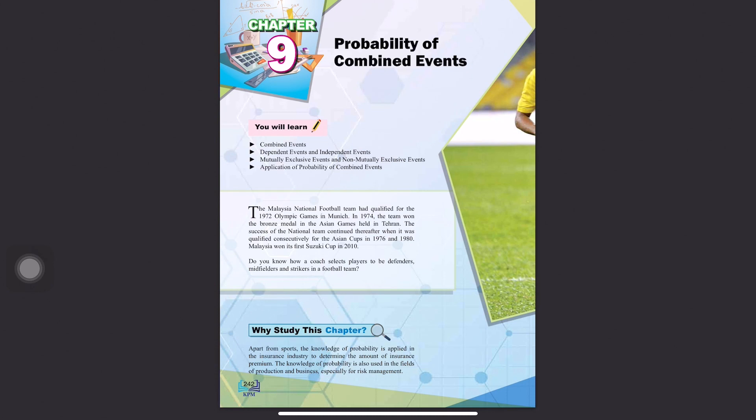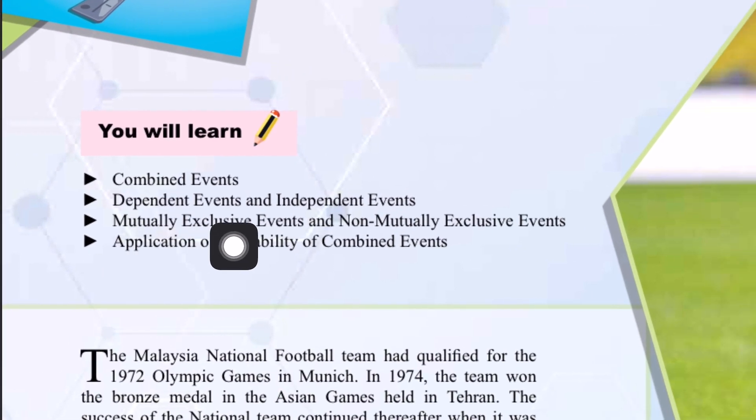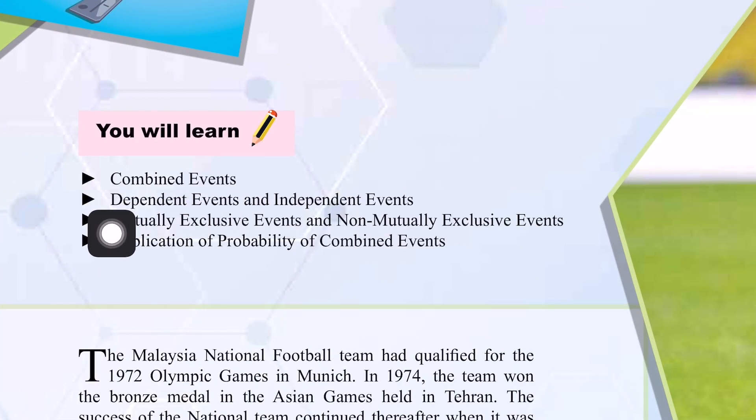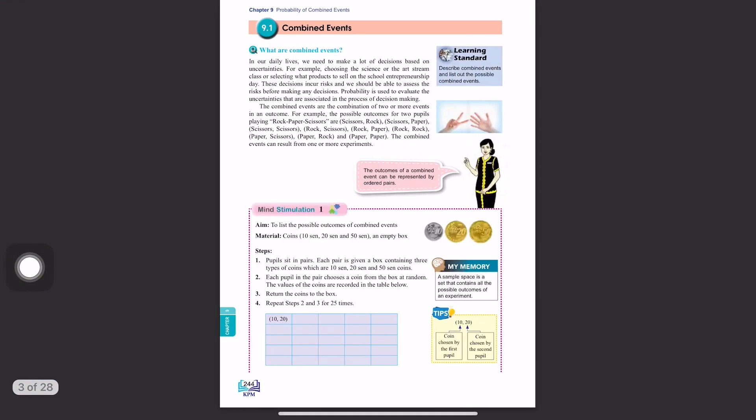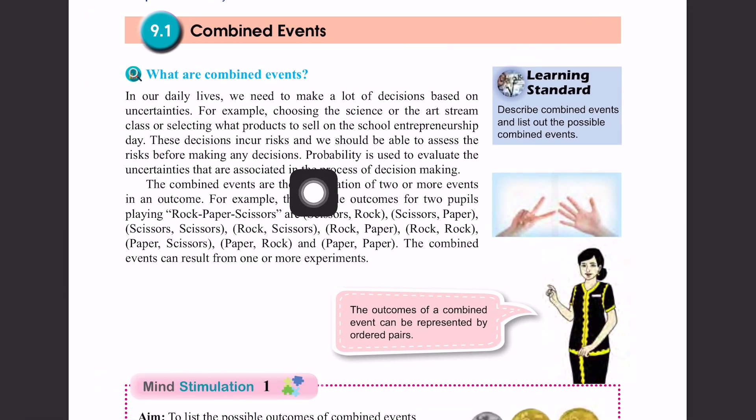Assalamualaikum warahmatullahi wabarakatuh and a very good day to everyone. Welcome back to our class. Today we're going to learn a new chapter, Chapter 9: Probability of Combined Events. In this chapter you will learn a few things - the first one is combined event, then you will learn what is dependent event and independent event, what is mutually exclusive event and non-mutually exclusive event, and what is application of probability of combined event.